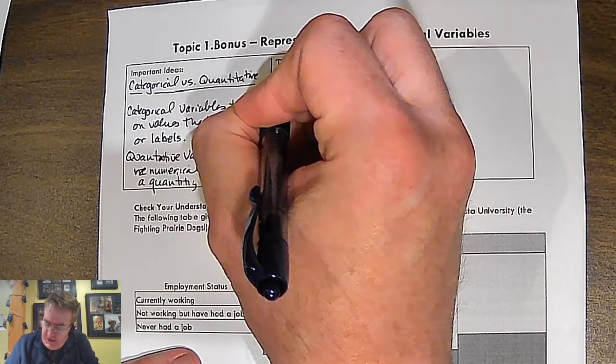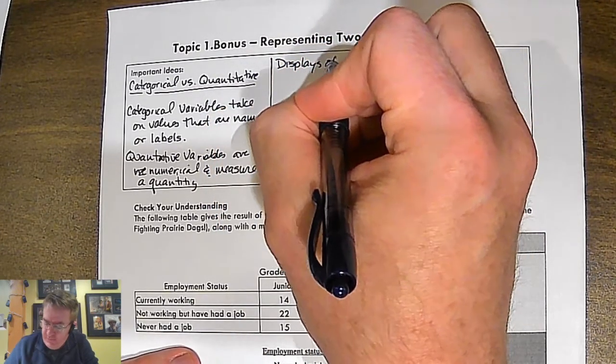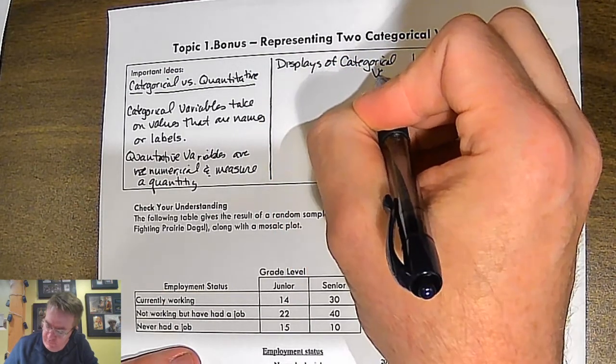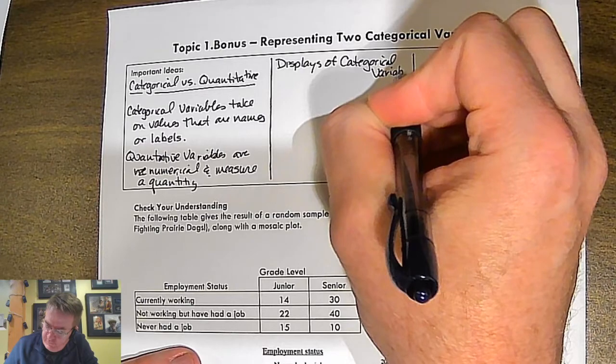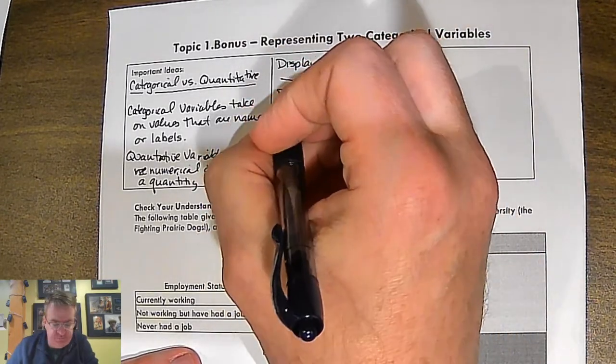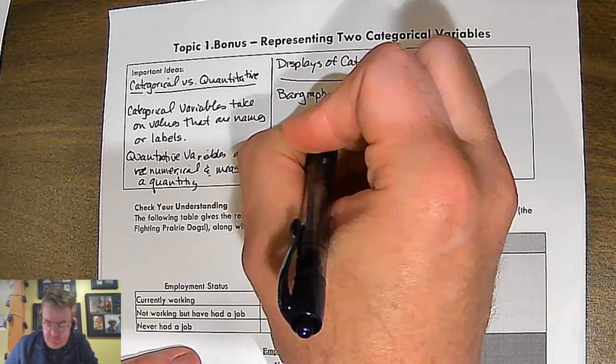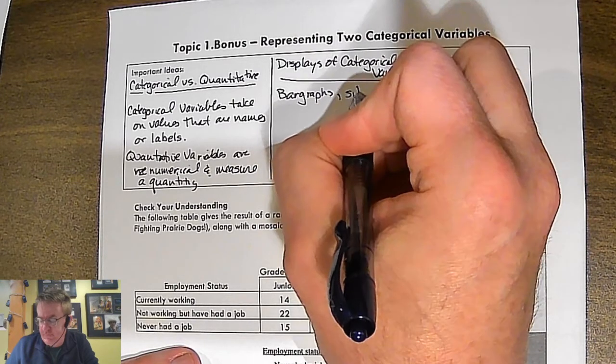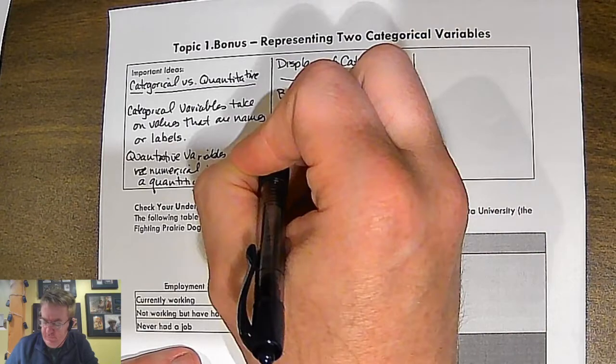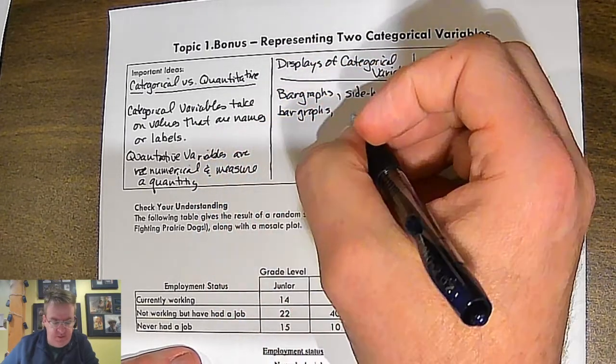Second part, displays of categorical variables. We have now three of them. So we have bar graphs, side by side bar graphs, segmented bar graphs.